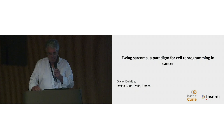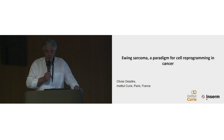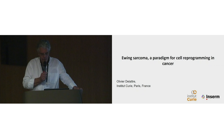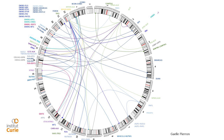I will speak about sarcoma and some solid tumors we are working on. My first slide is just to illustrate the genetic complexity of those tumors, and this is a circle plot showing the different chromosome translocations that are oncogenic in sarcoma.